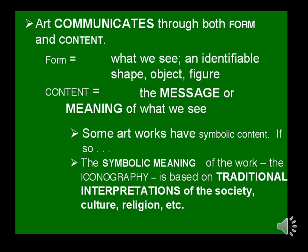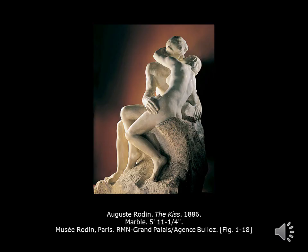Our next category is form and content. Art communicates through both form and content. Form equals what we see — an identifiable shape, object, or figure. Content is the message or meaning of what we see. Some artworks have symbolic content; if so, the symbolic meaning of the work — the iconography — is based on traditional interpretations of the society, culture, religion, etc. Iconography, which relates to content, will be the last category we go over for this lesson.